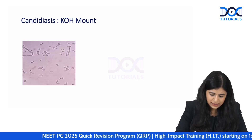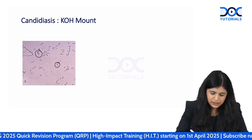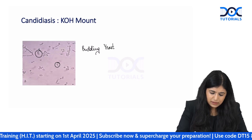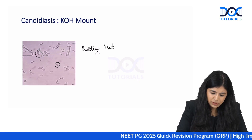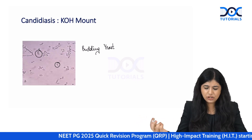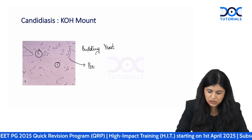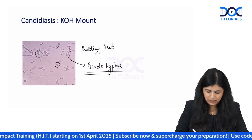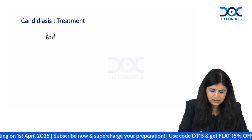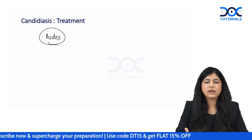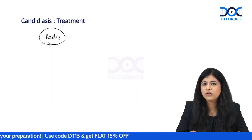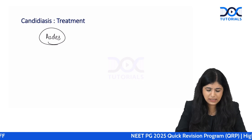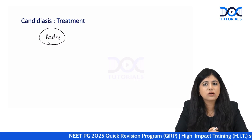For any fungal infection, the next investigation is a KOH mount. In candida, the KOH mount shows budding yeast and pseudo-hyphae — budding yeast that don't separate form long chains resembling hyphae. Treatment is with azoles, which can be used topically as creams and lotions or taken orally for more extensive disease.